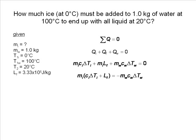Our goal is to find the mass of the ice, so we factor out mi and divide both sides by the quantity in parentheses.